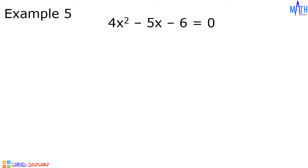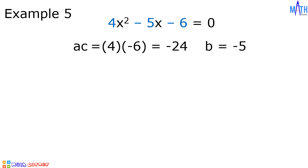Example number 5: 4x squared minus 5x minus 6 is equal to zero. In this equation, a is equal to 4, b is negative 5, and c is negative 6. Let us multiply a and c: 4 times negative 6 is equal to negative 24. Let us determine factors of negative 24 that when added equal negative 5. The factors we need are negative 8 and positive 3, since negative 8 plus 3 is equal to negative 5. Now let us divide negative 8 and positive 3 by the value of a: negative 8 divided by 4 is negative 2, and 3 divided by 4 is 3 over 4, already in its lowest term.